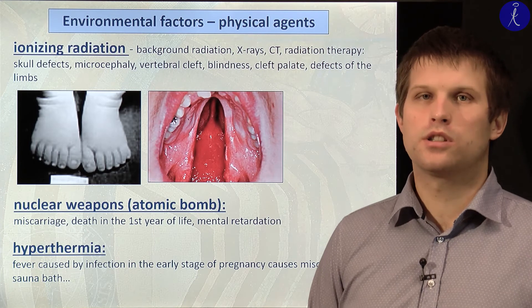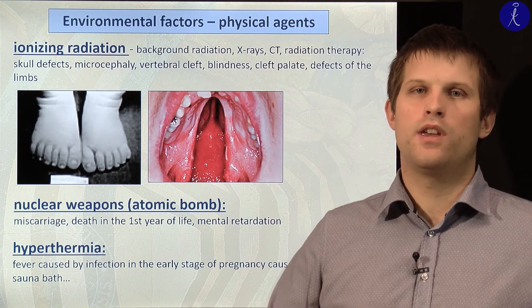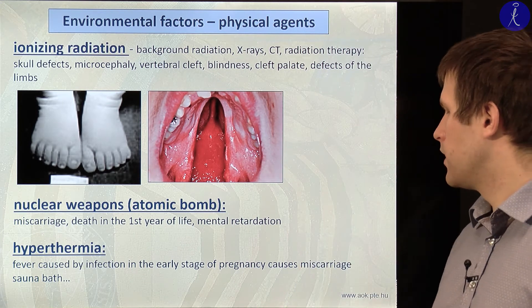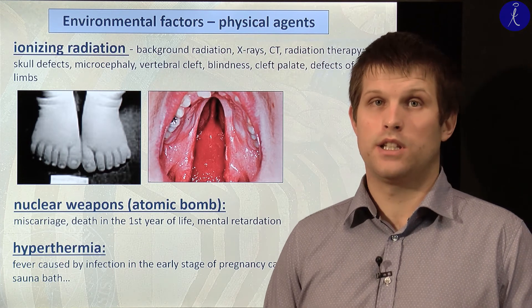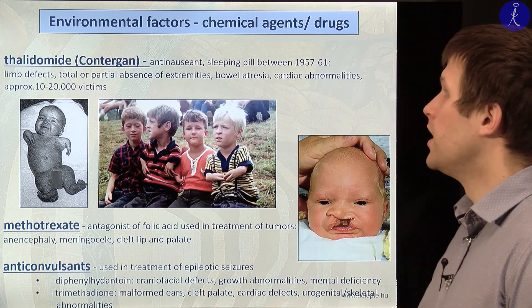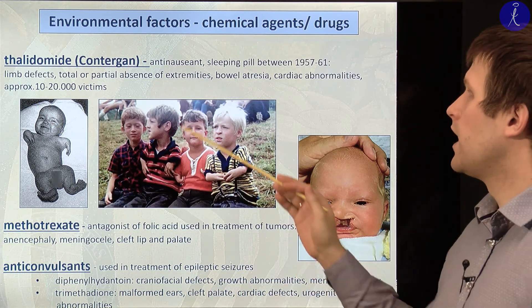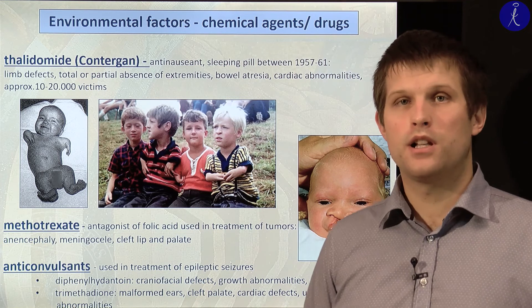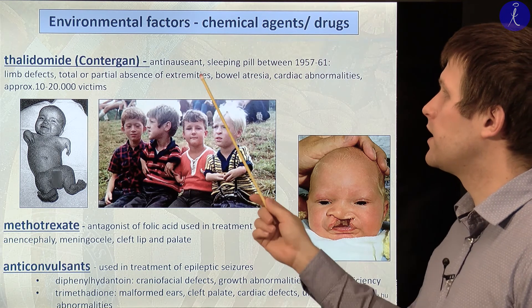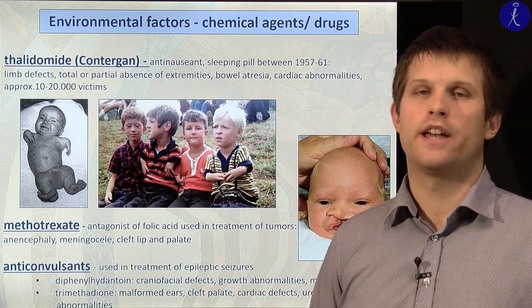Other environmental factors include drugs. Thalidomide (Contergon) was widely used as a sleeping pill and anti-emetic, but this anti-emetic was associated with partial absence of the extremities, shorter extremities, or cardiac abnormalities. It was used for approximately a decade and approximately 10,000 to 20,000 victims resulted. Thankfully, we do not use thalidomide as widely nowadays, but it is still used in several diseases.